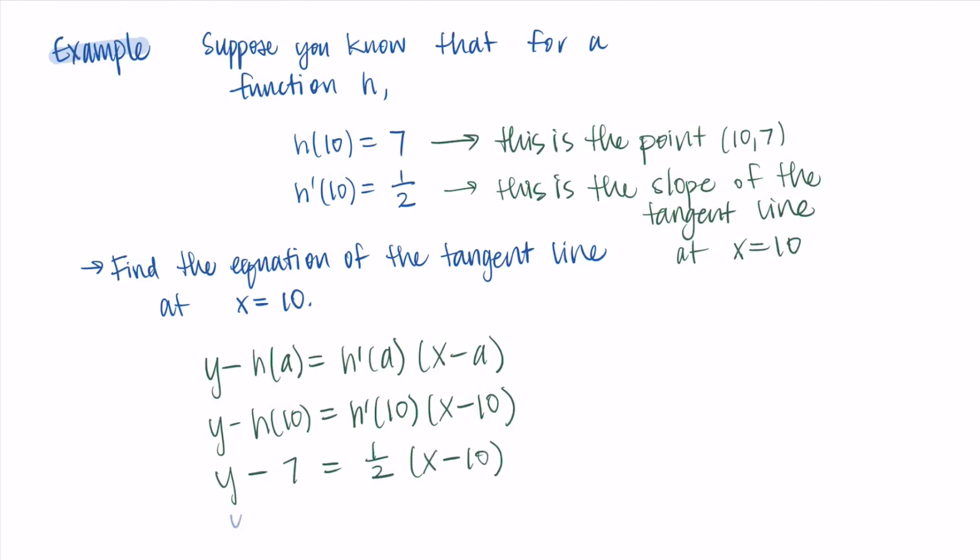And you might notice this really corresponds to the other way we used to write point-slope form, so we have a y₁ and an x₁, and m is the slope of our line. That's our 1/2, our derivative at 10.